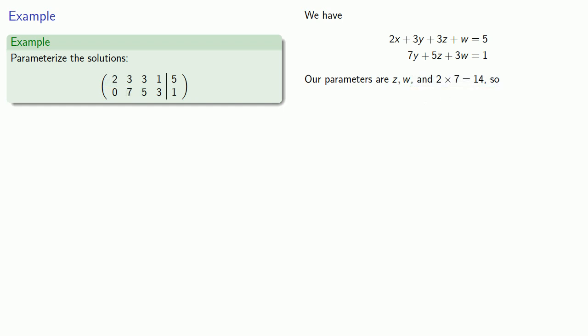So we'll make z equals 14t and w equals 14s. From the last equation, we can substitute in our values for z and w and solve for y.